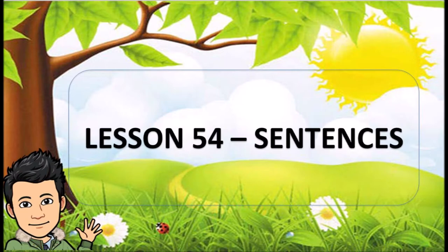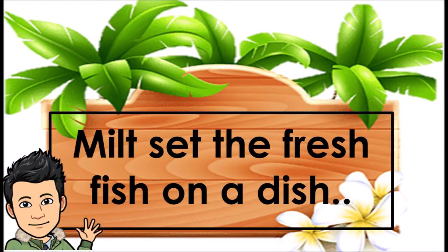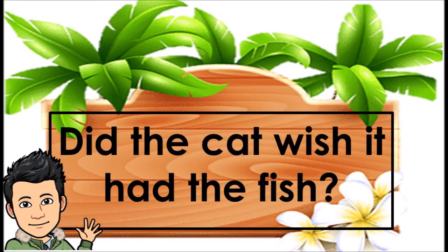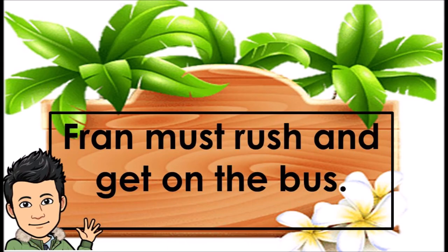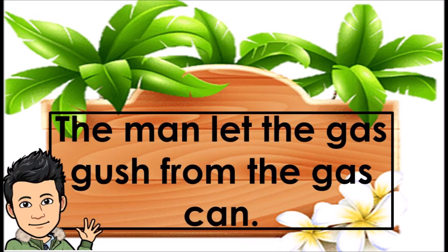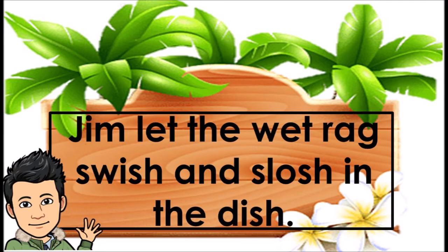Lesson 54 Sentences. Milt set the fresh fish on a dish. Did the cat wish it had the fish? Fran must rush and get on the bus. The man let the gas gush from the gas can. Jim let the wet rag swish and slosh in the dish.